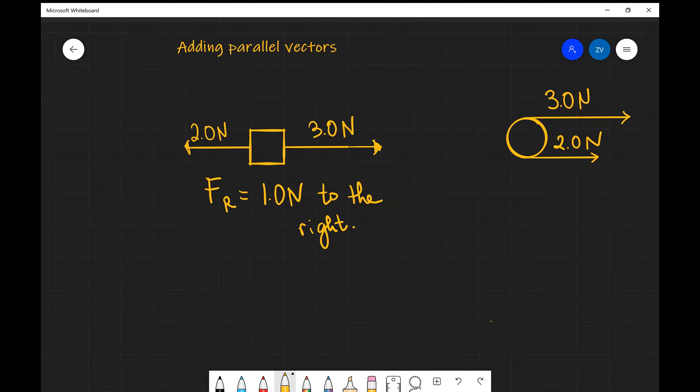or we could draw in an arrow. Now remember the size of the arrow represents the size of the force, so should we just pick a different colour? Now if this was the case we could even draw this over here, so if we were to represent the resultant force it would be as 1 newton to the right. So this over here is the resultant force.